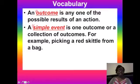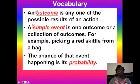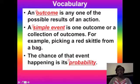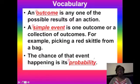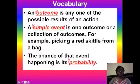The third vocabulary word you'll need in your notes is probability. Probability is the chance of that event happening. So if our simple event is rolling a die and we want to get a six, it's the chances that we actually get a six. If our simple event is picking a red Skittle, it's going to be dependent on how many red Skittles are in the bag. Pause the video here if you need to write these down.